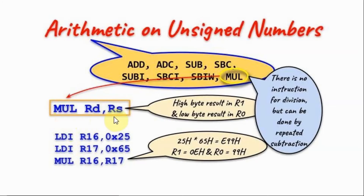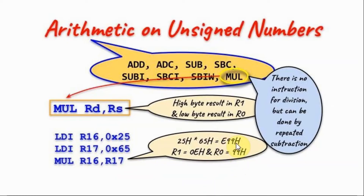Next, we have the multiply instruction, where the values in the operand registers are multiplied, generating a 16-bit number. The high byte is stored in R1 and the low byte is stored in R0. As an example, we are multiplying hexadecimal 0x25 with 0x65, generating a 16-bit product 0x0E99, where the high byte is in R1 and the low byte is in R0.